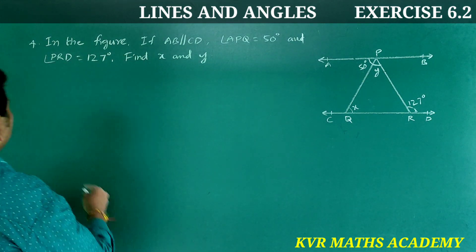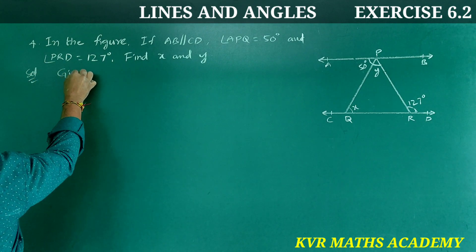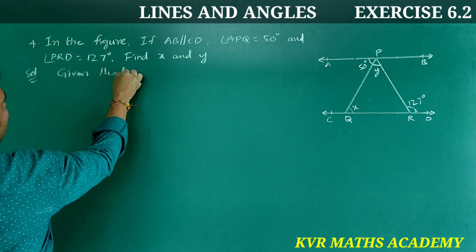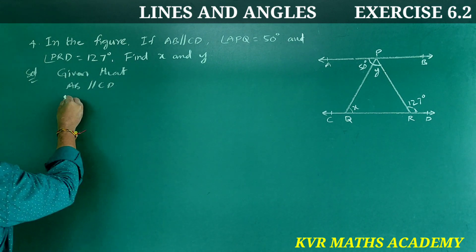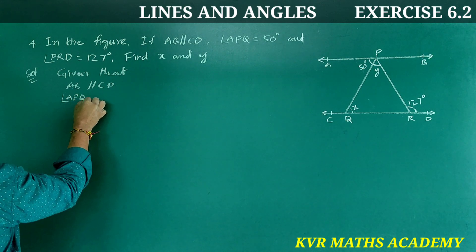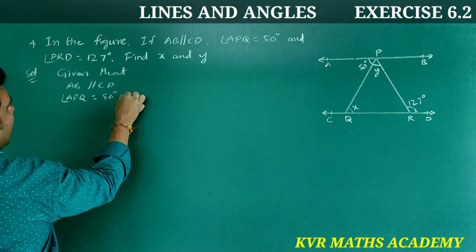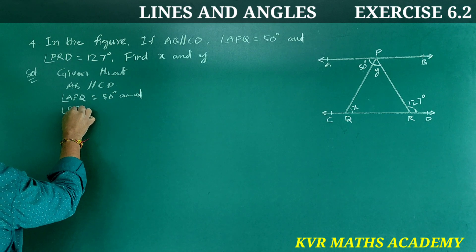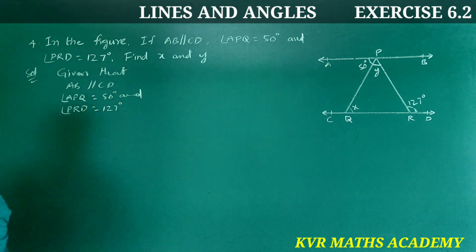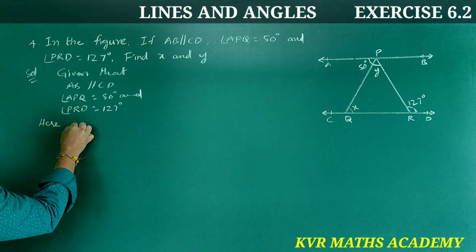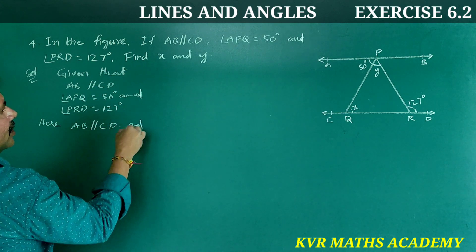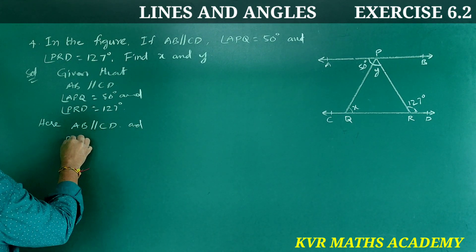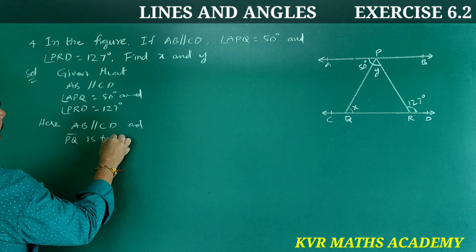Let's do the solution. Given that AB is parallel to CD, angle APQ is equal to 50 degrees, and angle PRD is equal to 127 degrees.